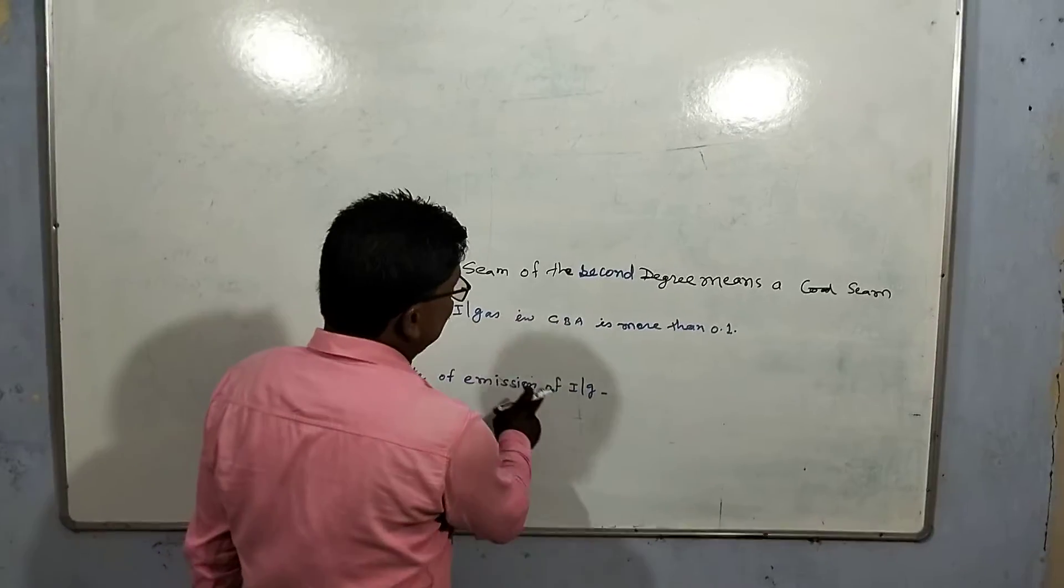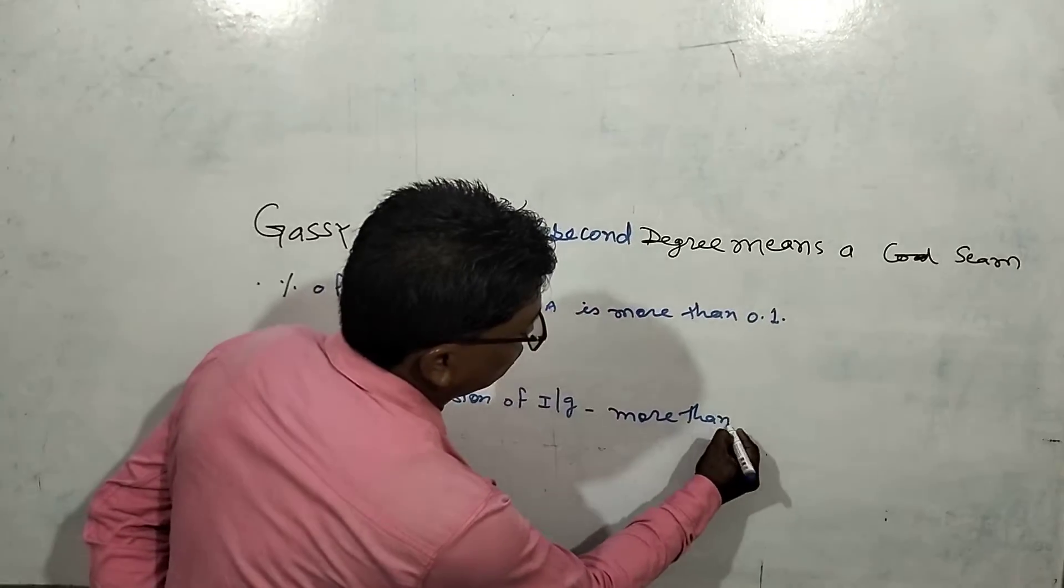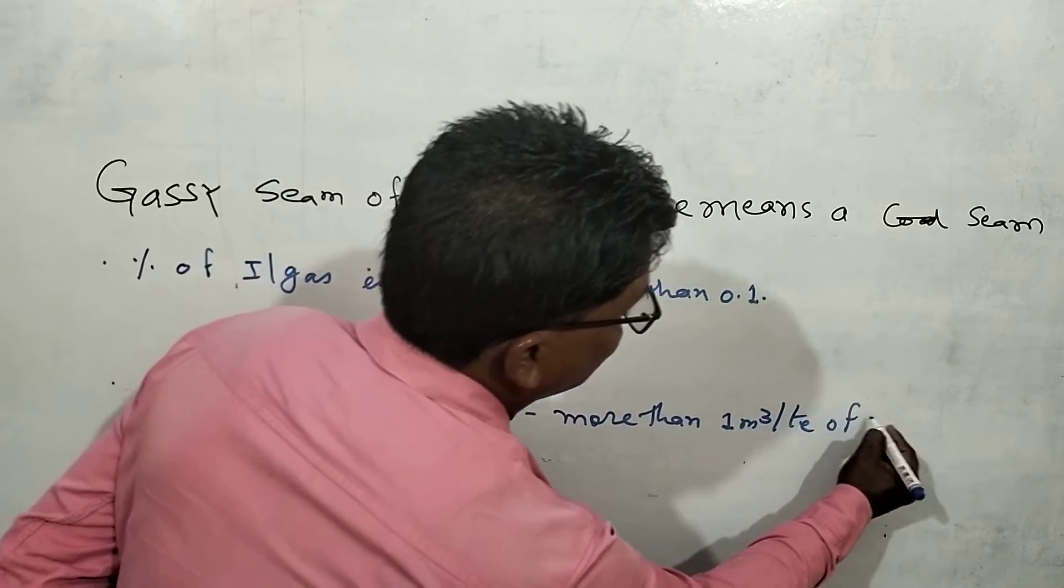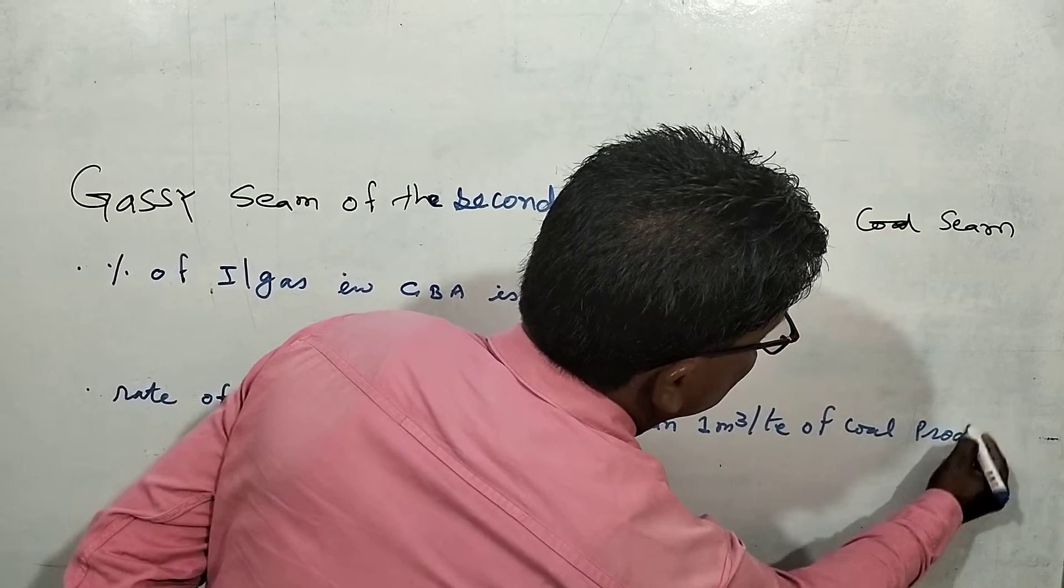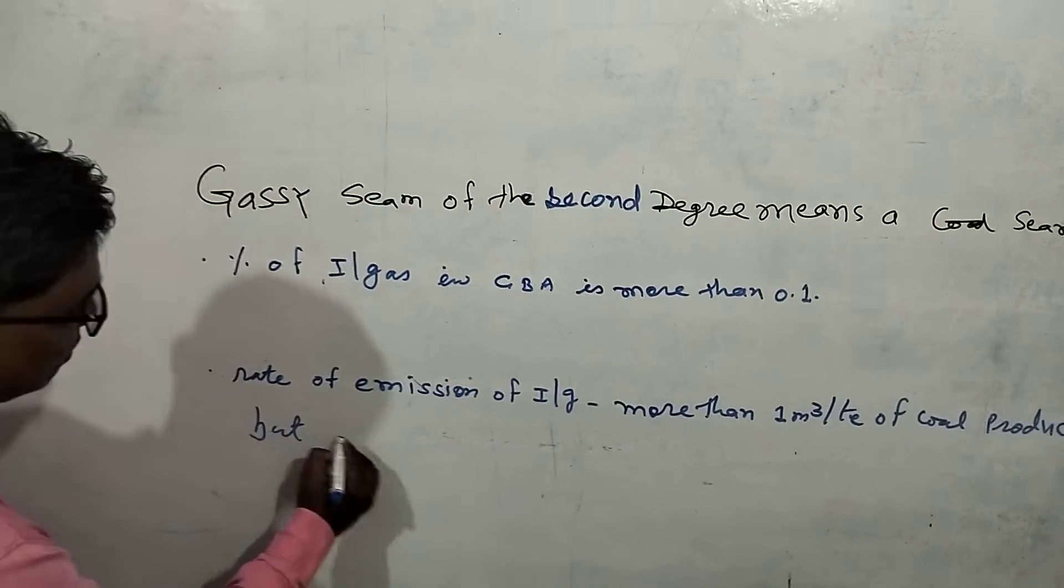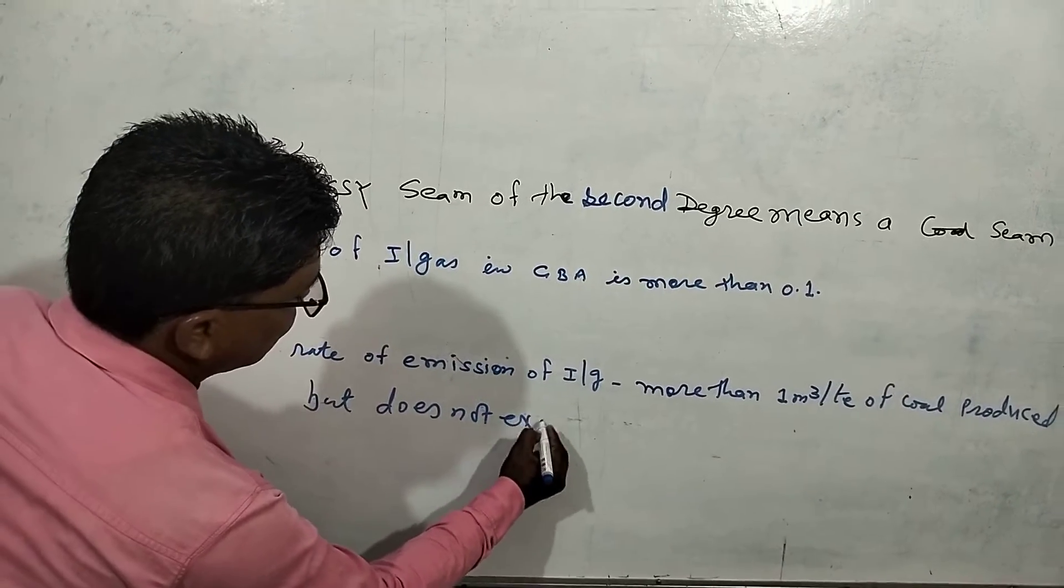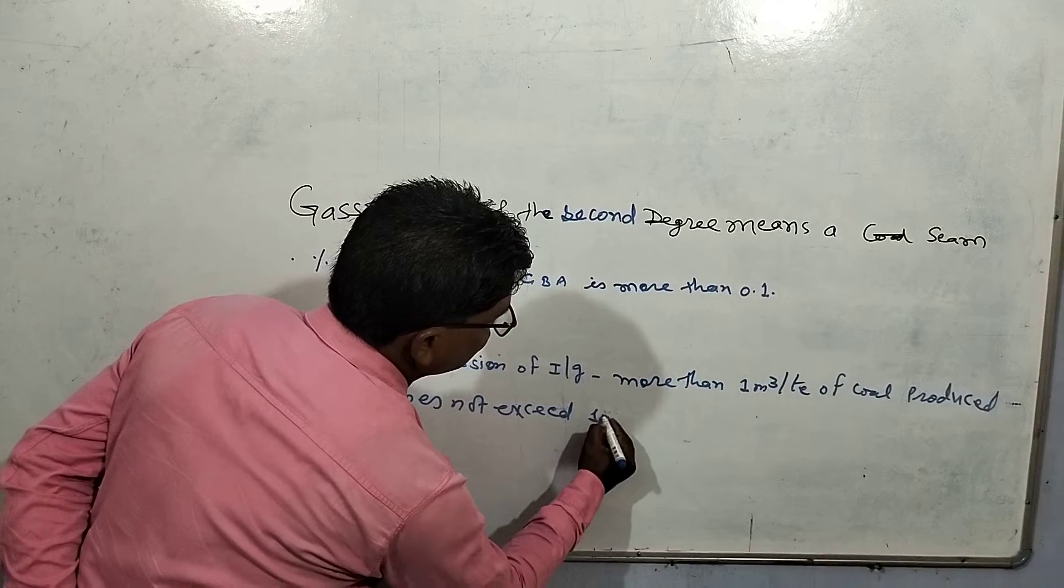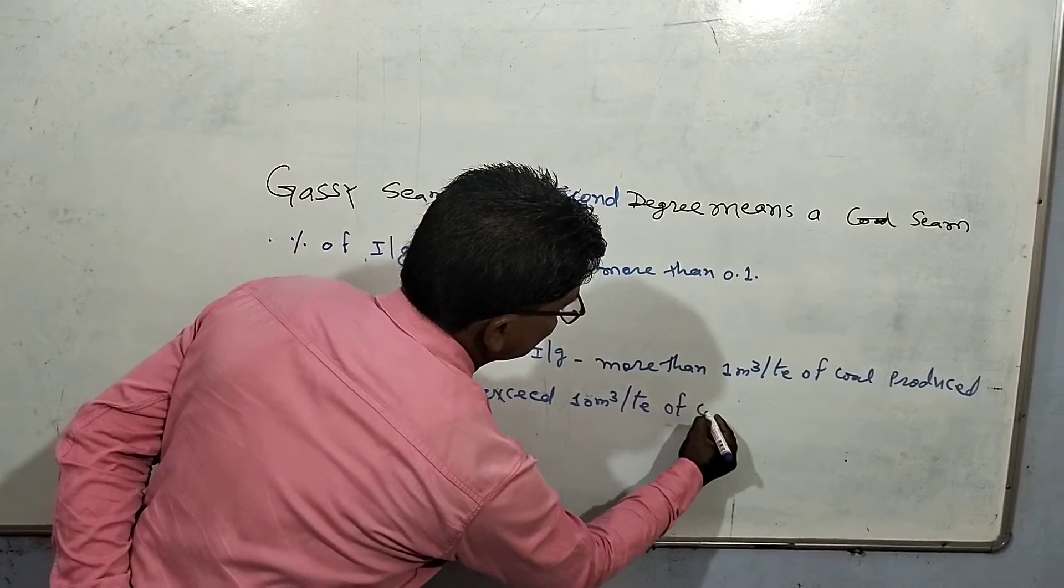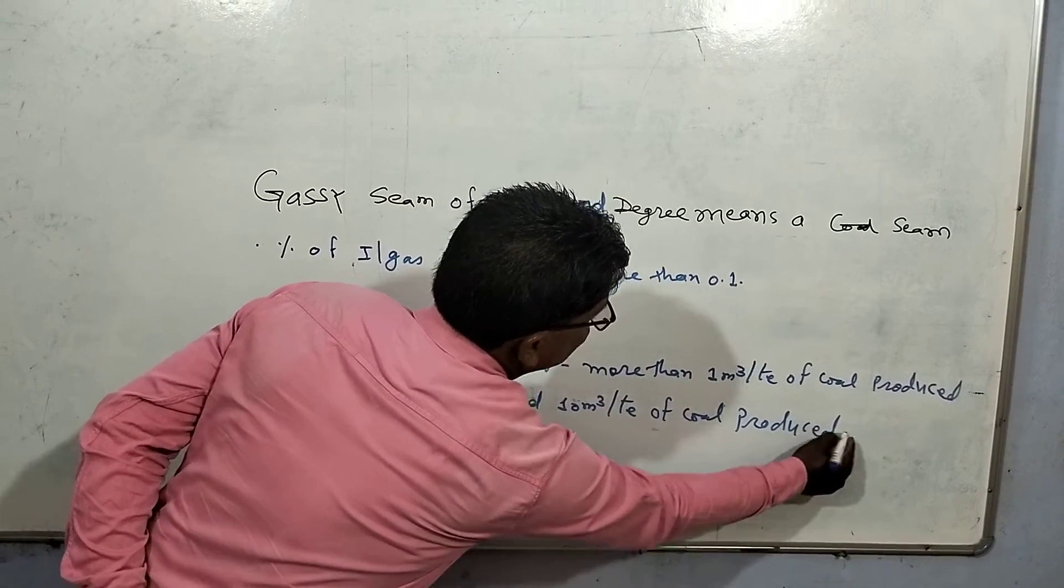Rate of emission of influx gas is more than 1 cubic meter per ton of coal produced, but does not exceed 10 cubic meters per ton of coal produced. How many criteria to define degree 2 gassy seam?